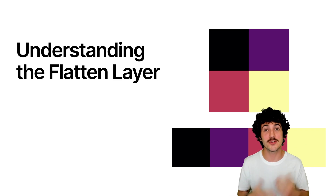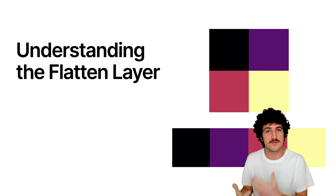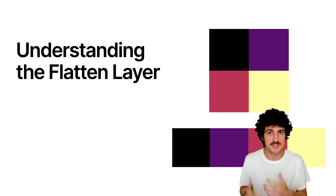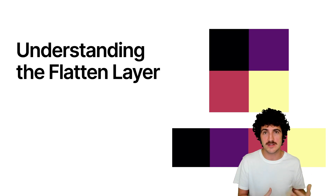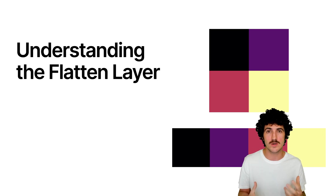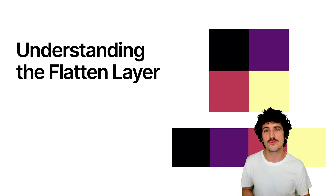Hey, it's Nano and we're going to see what the flatten layer does in TensorFlow. This is a layer that we're going to use through Keras, and we're just going to pass an image through it to see what it does to an image. Let's go to Colab to take a look.